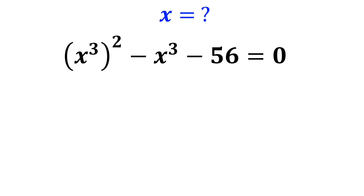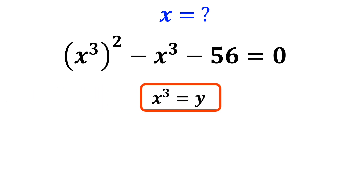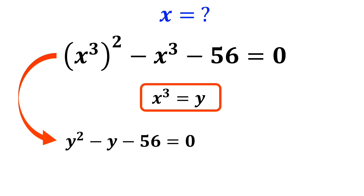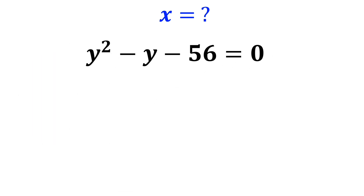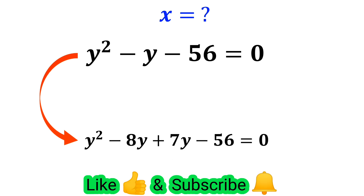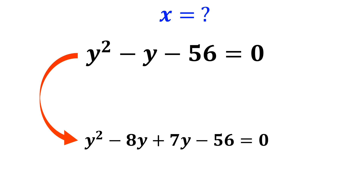Alright, let's assume x to the power of 3 is equal to y. So we can write this expression as y squared minus y minus 56 equals 0. Now we slightly change the form of the equation and write it as y squared minus 8y plus 7y minus 56 equals 0.